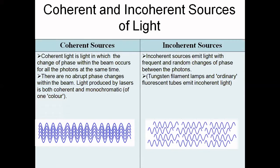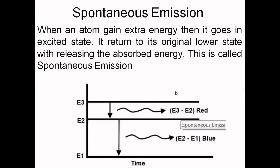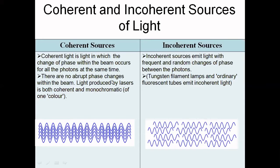In incoherent sources, light is emitted with frequent and random changes of phase between photons. You can see that the phase change of these photons is random — there is no relationship between their phase changes. LEDs and light bulbs in homes and cars are good examples of incoherent sources. Light produced by laser is both coherent and monochromatic, meaning it is of one color only.